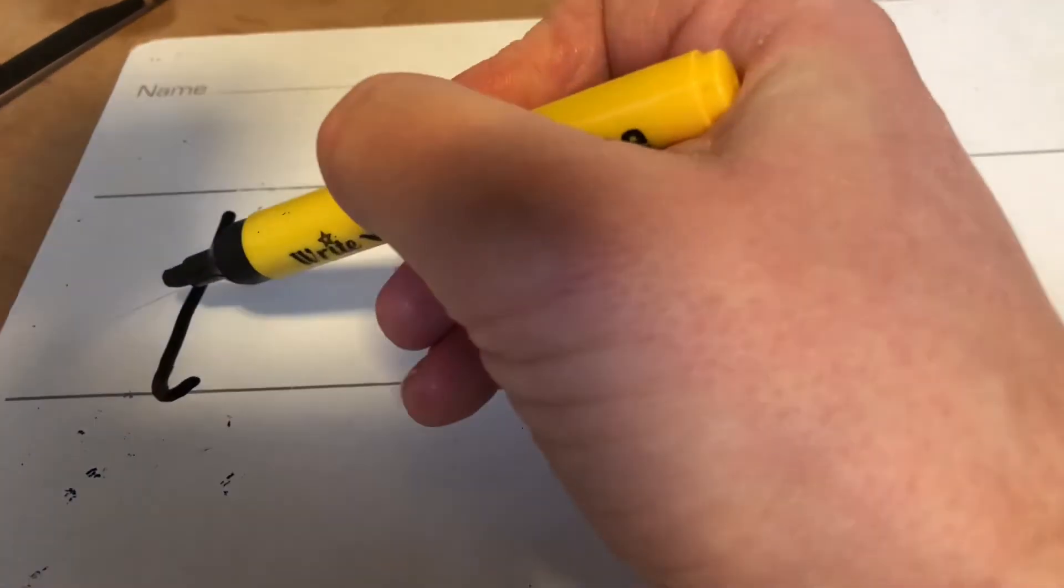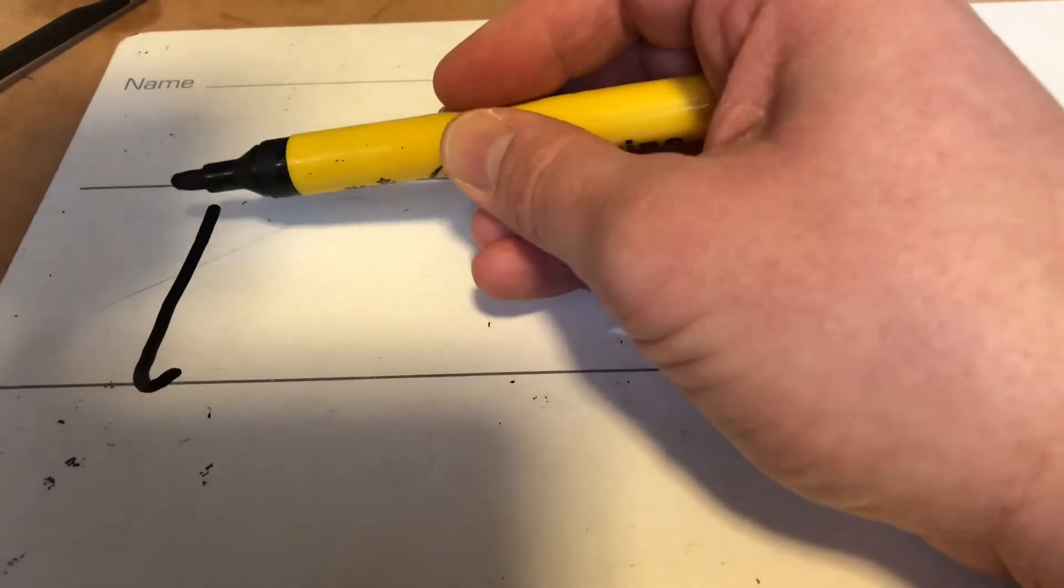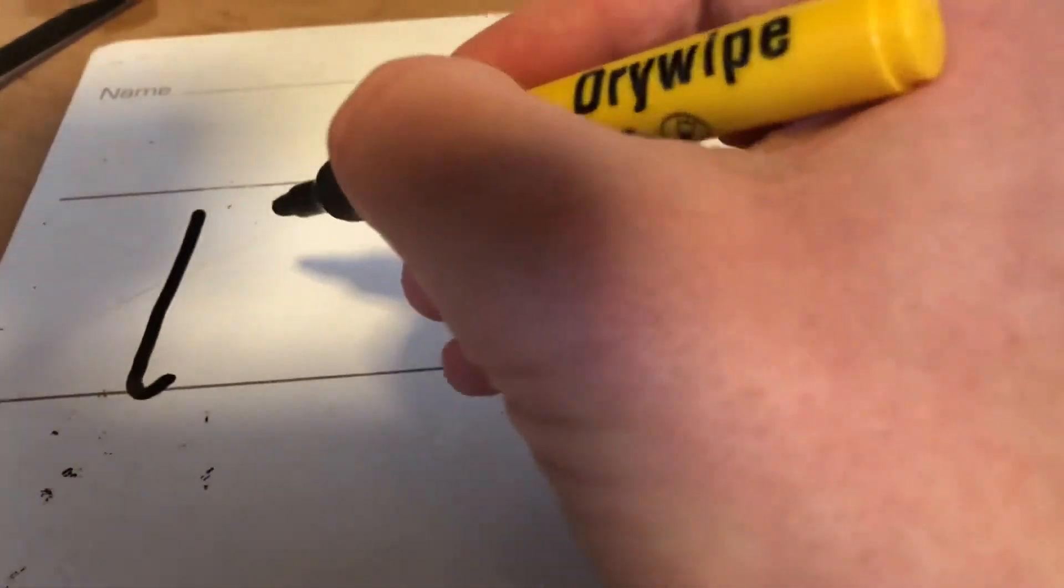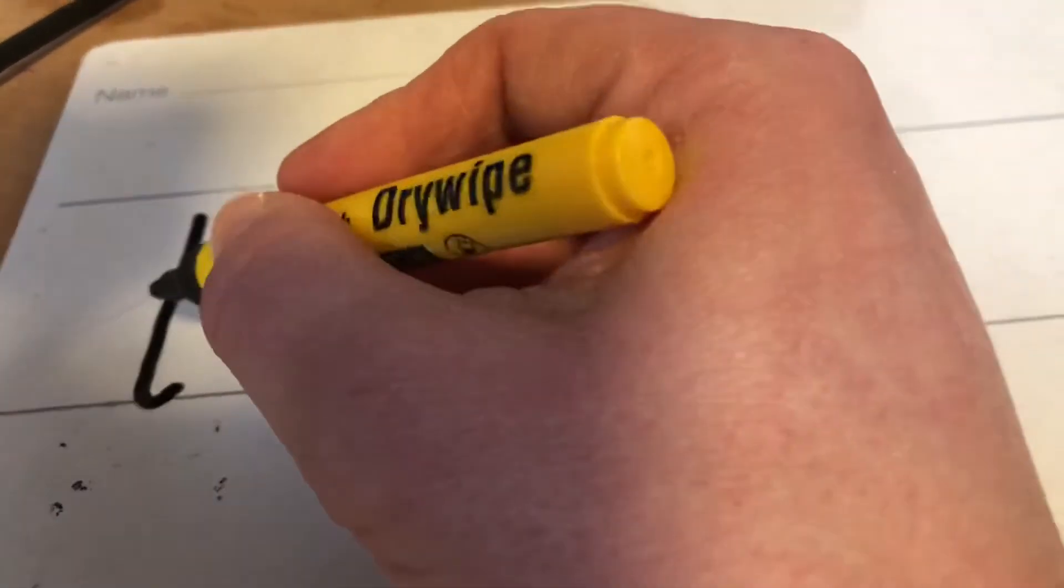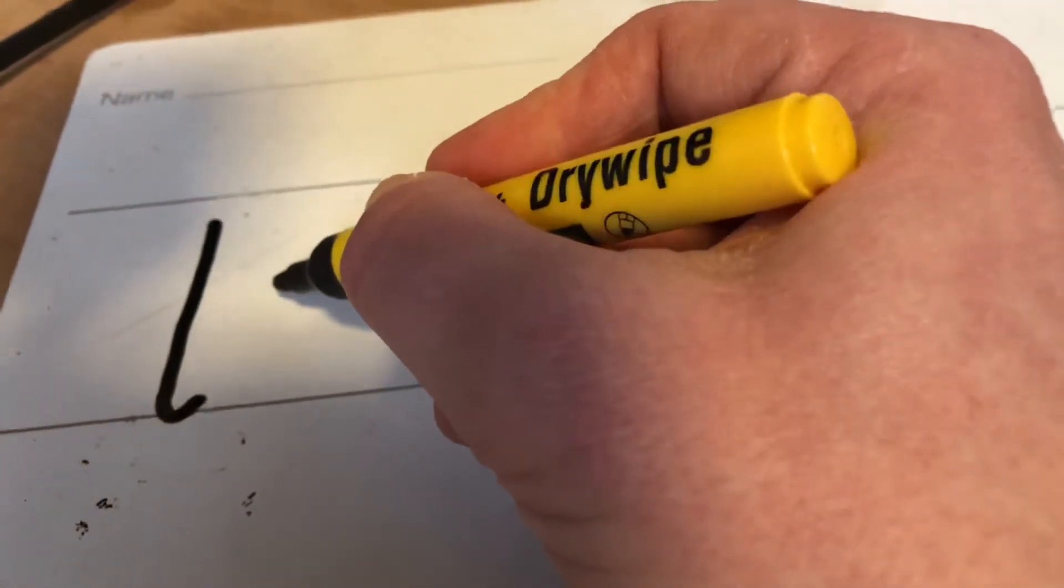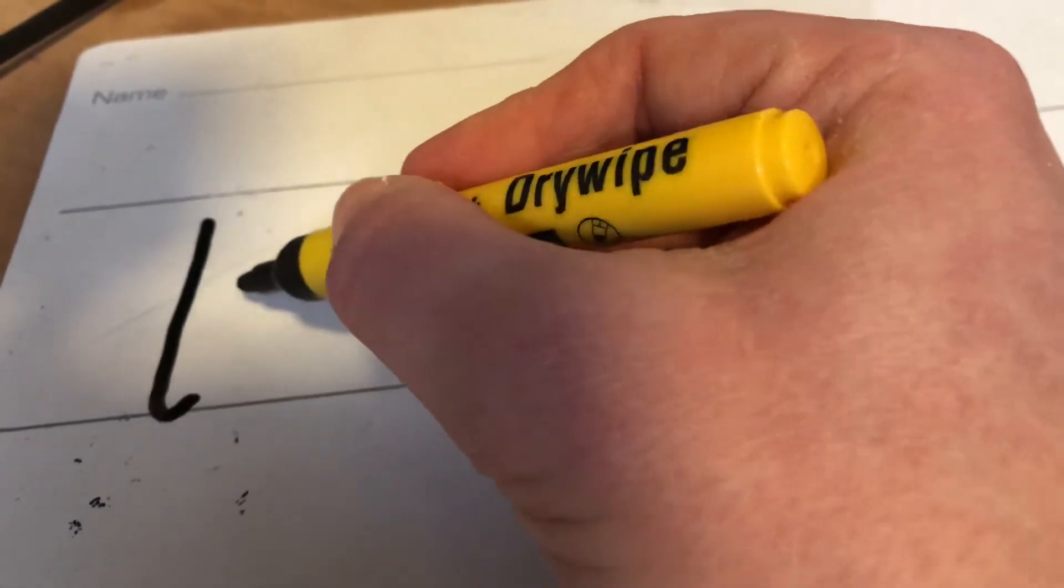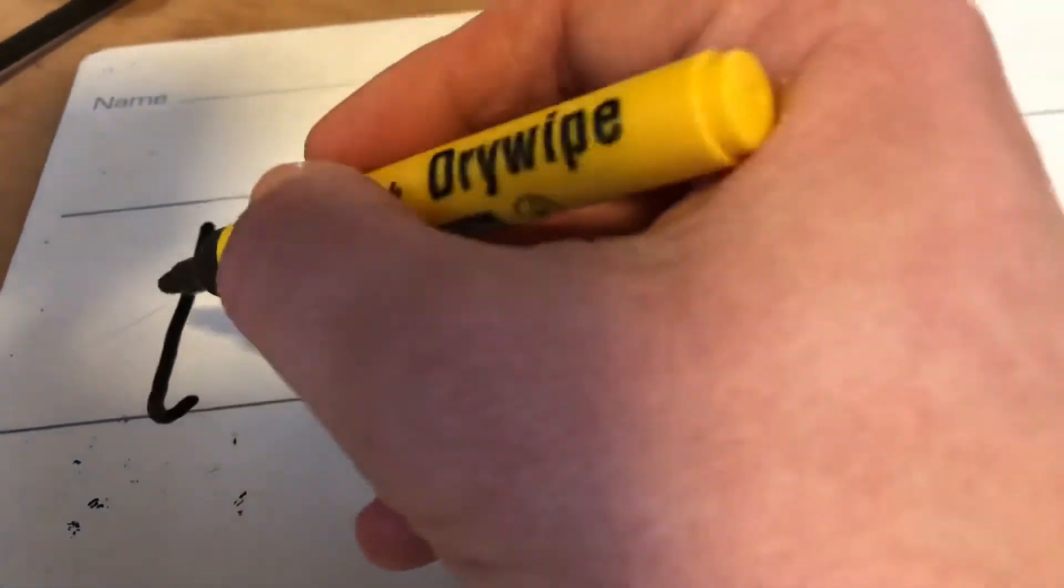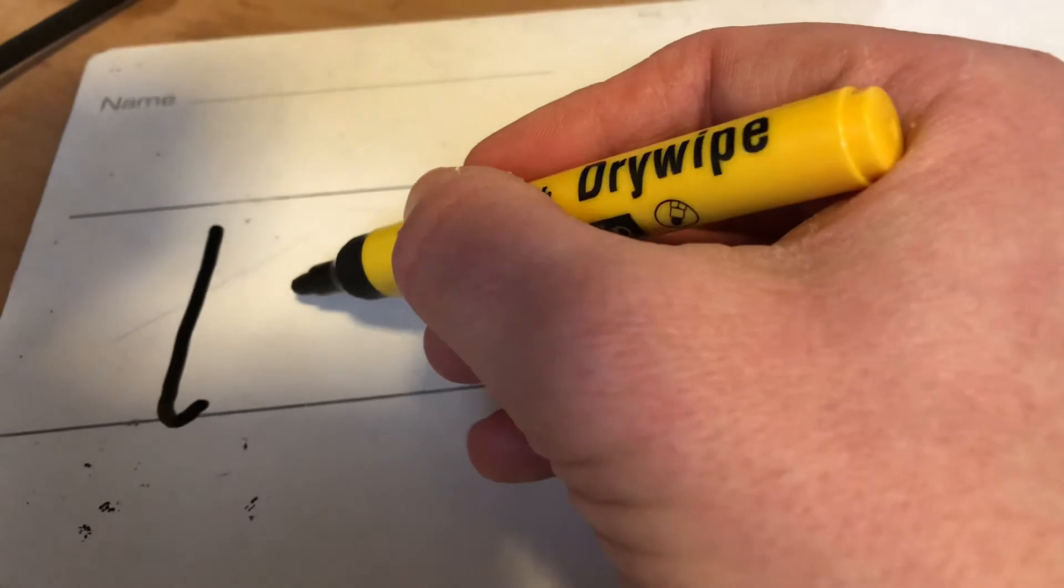But can you remember I said it's a letter with an ascender because it's got this tall part that goes above the middle letters. So that's the L. And then next to it, I'm going to do the I that we practiced today, which is still a ladder letter. But an I is the same, like normal height of letters. It hasn't got an ascender. So it's half the size here almost of the L.